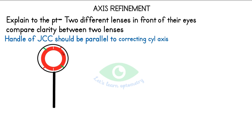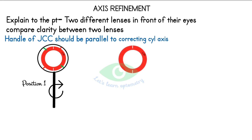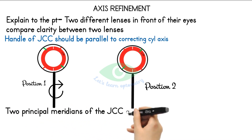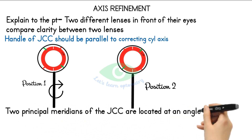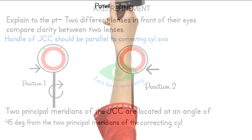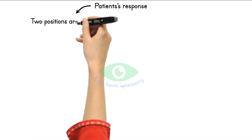In this case, the correcting cylindrical lens is minus 1 at 90 degrees, so we place the handle of the JCC parallel to 90 degrees — call this position 1. Note the orientation of the red and green markings. Now flip the JCC so that the red and green markings are reversed — call this position 2. Ask the patient to tell any change in vision between the two positions. Note that the principal meridians of the JCC are located at 45 degrees from the two principal meridians of the corrective cylindrical lens.